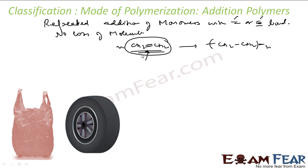There are a lot of examples for this. We can further classify addition polymers. Before that, let us see one more reaction for addition polymers. Let us see for the tyre - this is polyethene as I told. And let us see for tyre - I told tyre has Buna-S. And let us see for Buna-S the reaction.